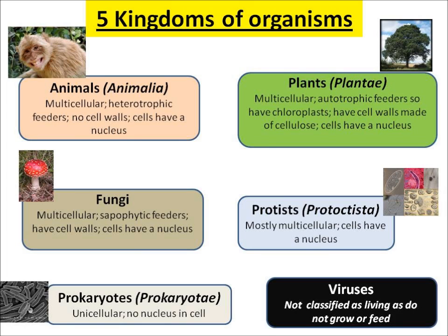Plants are also multicellular, but they make their food by photosynthesis — we say they are autotrophic because they make their own food. They have chloroplasts, they also have cell walls made out of cellulose, and their cells also have a nucleus.